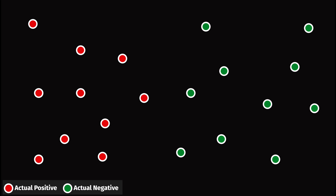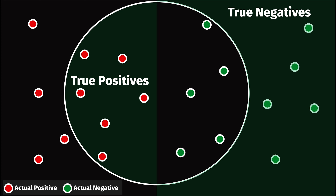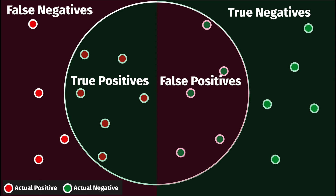Once we have a model, it will make predictions. Here the model predicted the cases inside the circle as positive. Some predictions are correct, other predictions are incorrect. When the model correctly identifies a positive case, this classification is a true positive, or TP. Incorrect positive predictions are false positives, or FP.